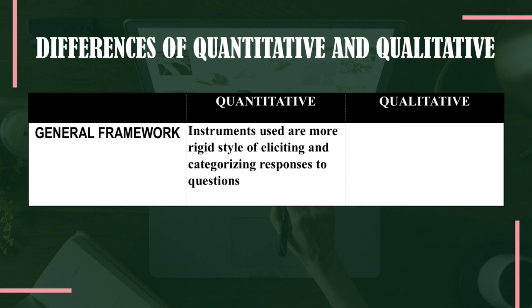Next, in quantitative research, instruments used are a more rigid style of eliciting and categorizing responses to questions. Therefore, there is a subpart in the methodology of quantitative research termed as scoring and interpretation of data. This depicts the scale that the researchers followed in the survey questionnaire, like the Likert five-point scale of agreement: five — strongly agree, four — agree, three — undecided, two — disagree, and one — strongly disagree.